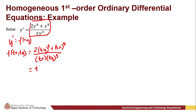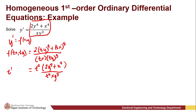We get t⁴ · (2y⁴ + x⁴) / (t⁴ · xy³), which simplifies to t⁴ · f(x,y). So this is confirmed to be a homogeneous differential equation of degree 0.